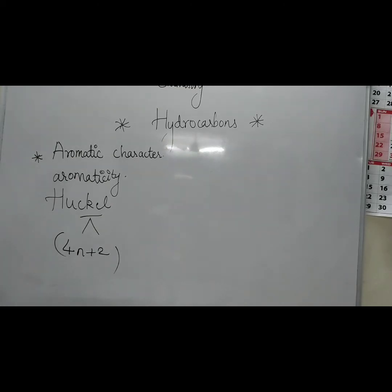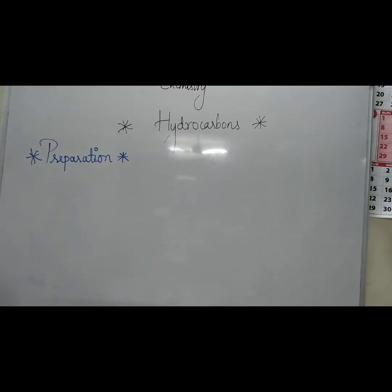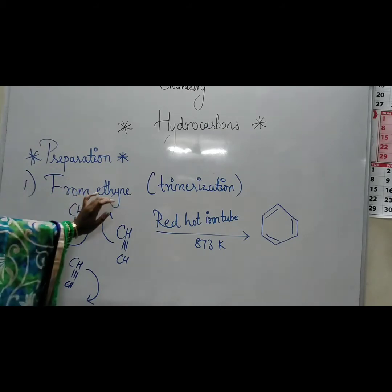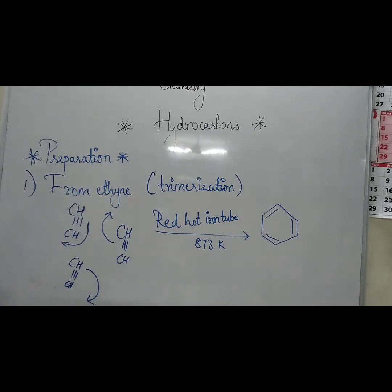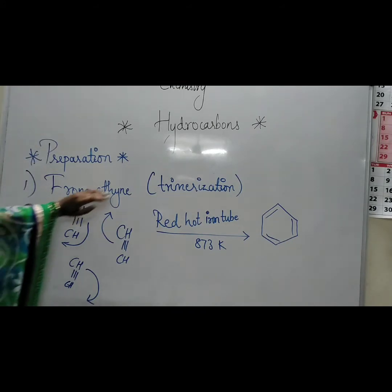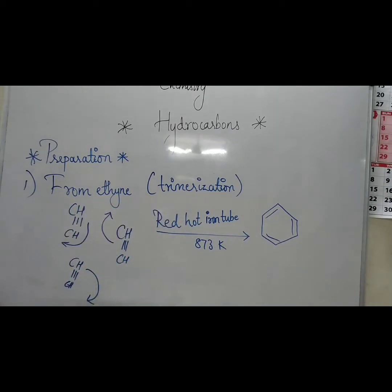Now we will check the preparation of these aromatic compounds by industrial source. Benzene is prepared industrially from coal tar and petroleum. Moving on to the methods of preparation — the first method is from ethyne. Ethyne is the alkyne part, with structure CH≡CH. We will use trimerization, meaning we take three ethyne molecules. Why three? Because three ethyne molecules give us 6 carbons, and benzene's structure is C6.